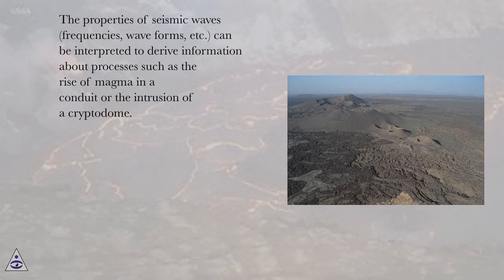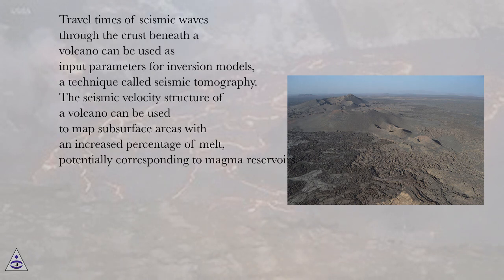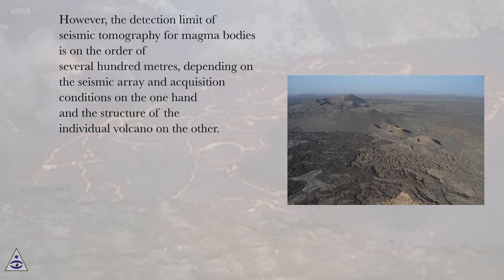The properties of seismic waves — frequencies, wave forms, etc. — can be interpreted to derive information about processes such as the rise of magma in a conduit or the intrusion of a cryptodome. Travel times of seismic waves through the crust beneath a volcano can be used as input parameters for inversion models, a technique called seismic tomography. The seismic velocity structure of a volcano can be used to map subsurface areas with an increased percentage of melt, potentially corresponding to magma reservoirs. However, the detection limit of seismic tomography for magma bodies is on the order of several hundred meters, depending on the seismic array and acquisition conditions and the structure of the individual volcano.